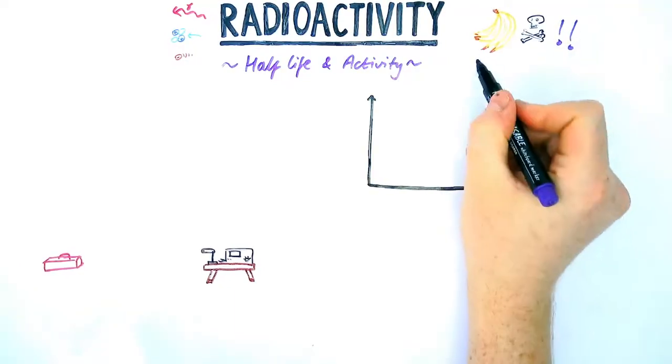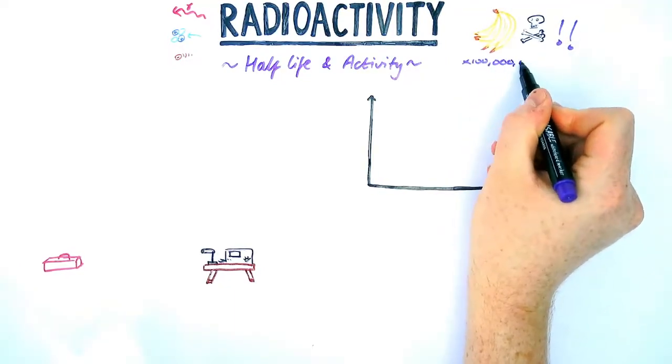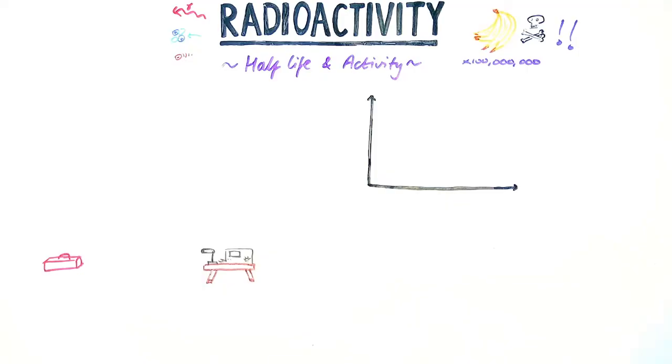The potassium in bananas means they are radioactive, however you'll need to eat 100 million of them to get sick from radiation poisoning, so not to worry.